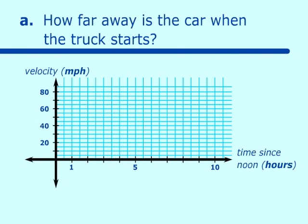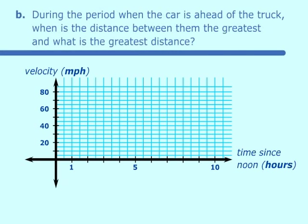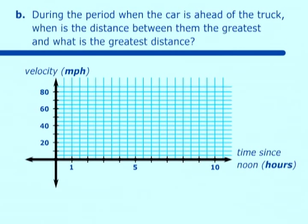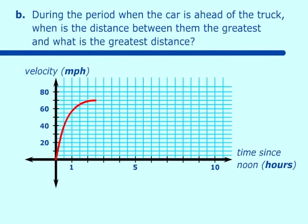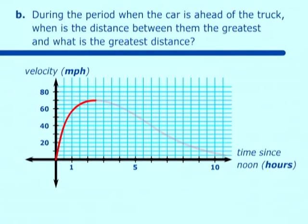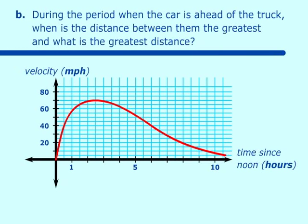Second question: during the period when the car is ahead of the truck, when is the distance between them the greatest, and what is the greatest distance? We see the car is moving along again, velocity increasing, increasing, increasing, and then it begins to decrease. Now when is the distance between them the greatest? Remember, the car is still going faster than the truck until it reaches the time when their velocities intersect.